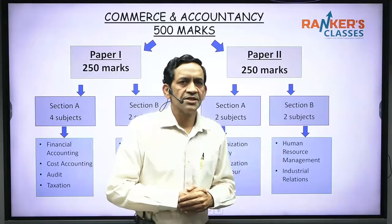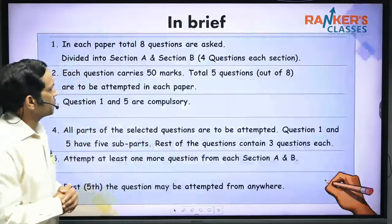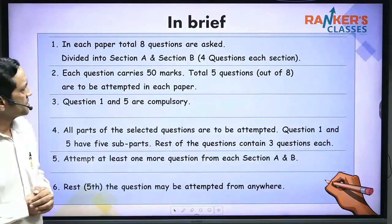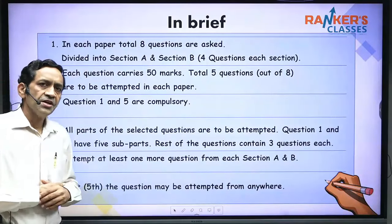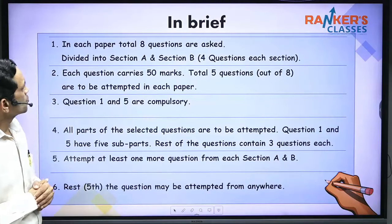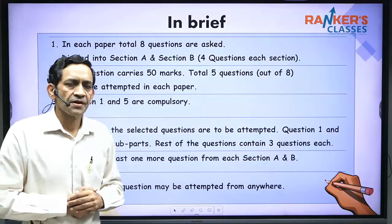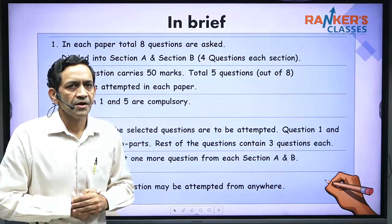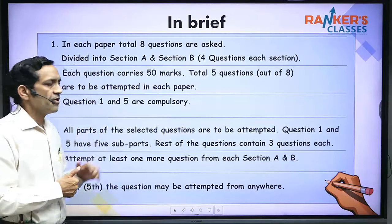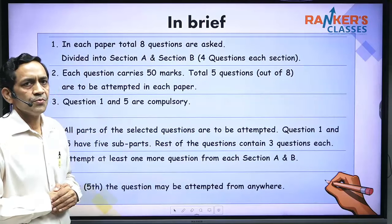In each paper, UPSC asks eight questions — four from Section A and four from Section B. Out of eight questions you have to attempt five questions. Each question carries 50 marks, so 50 multiplied by 5 equals 250 marks in Paper 1 and 250 marks in Paper 2. Question number 1 and question number 5 are compulsory in both Paper 1 and Paper 2.